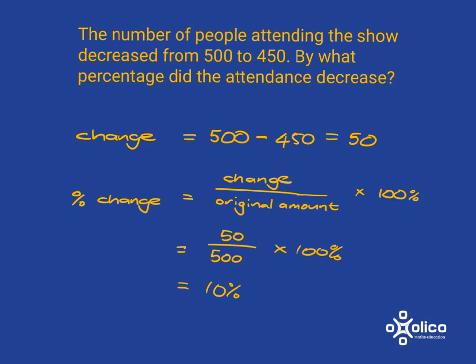You can see here that even though there was a big number drop of 50 — bigger than in our previous example — the percentage change is smaller because the crowd was bigger to start with. So relative to the bigger crowd, those 50 that left was not as much of an impact.